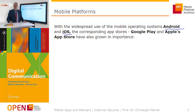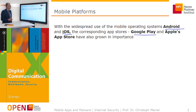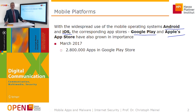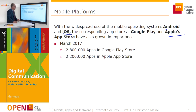For both operating systems there exist huge platforms where users can download apps. This is Google Play for the Android operating system and Apple App Store for Apple iOS. These platforms are becoming more and more important. There is a huge amount of apps available — almost 3 million apps from the Google Play Store as of March 2017, and more than 2 million apps available in the Apple App Store.